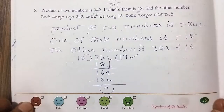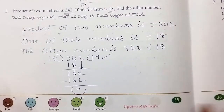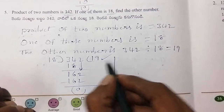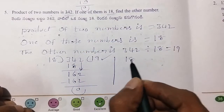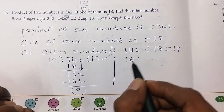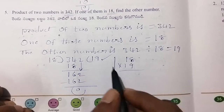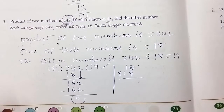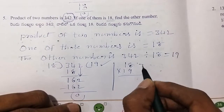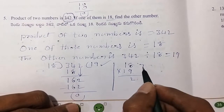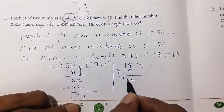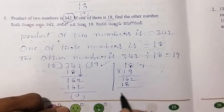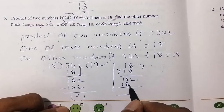The other number is 19. Checking: 18 times 19 — 1 times 8 are 8, 1 times 1 is 1. Then 6 plus 8 is 14.